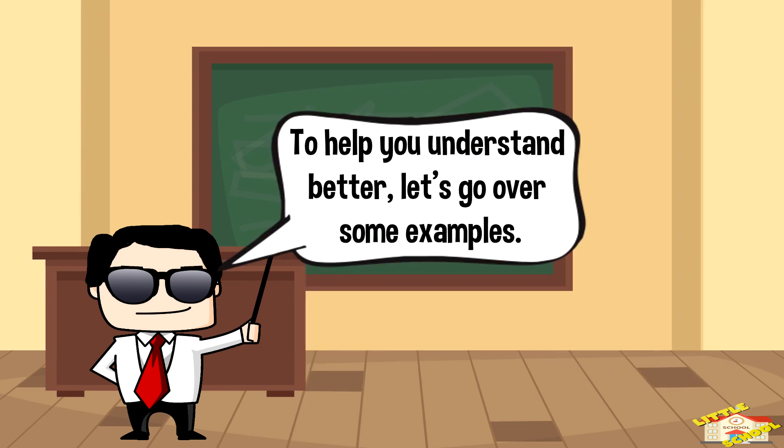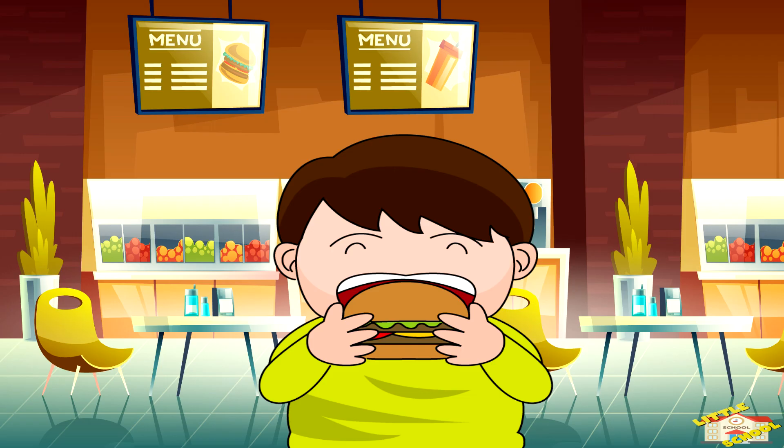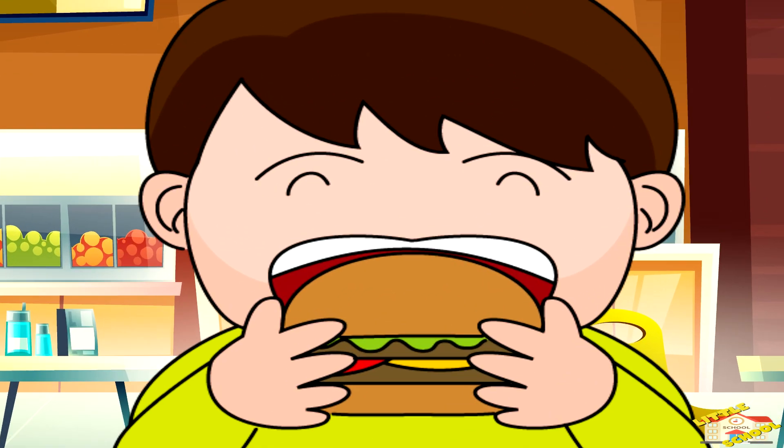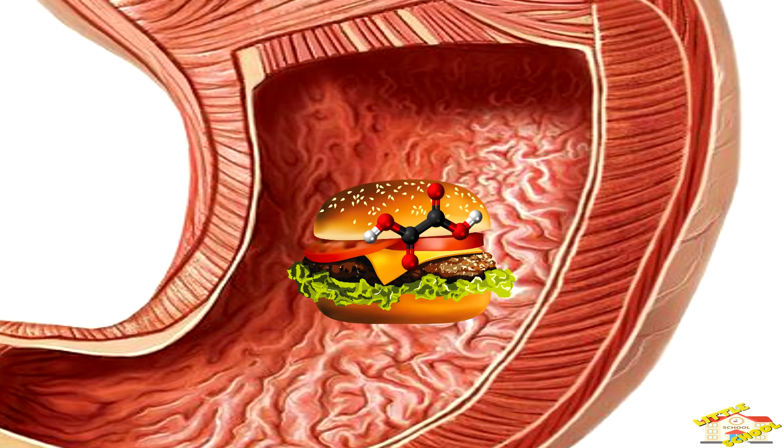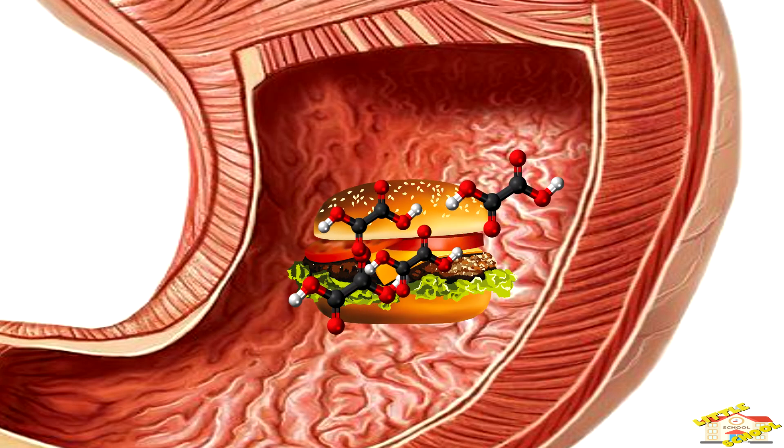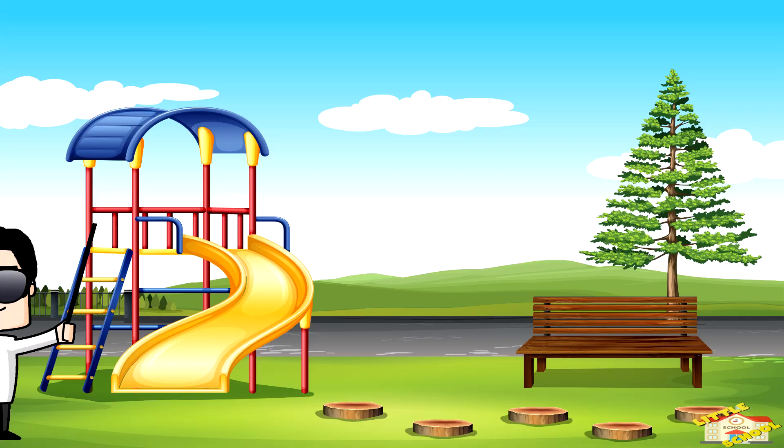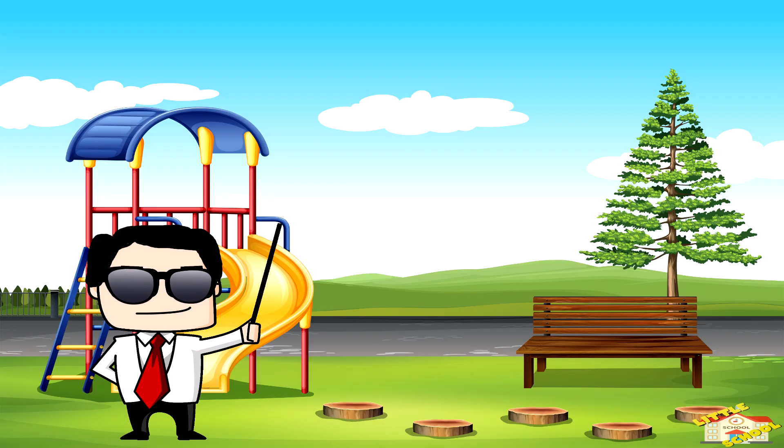To help you understand better, let's go over some examples. When you eat food like a delicious sandwich, your body breaks down the molecules in that sandwich and the chemical energy stored in those molecules is released. This released energy is what gives you the power to run, jump, and play.